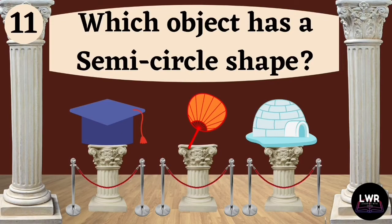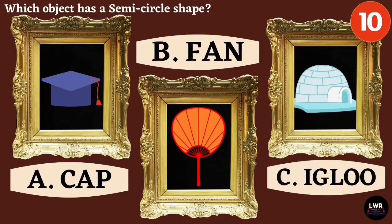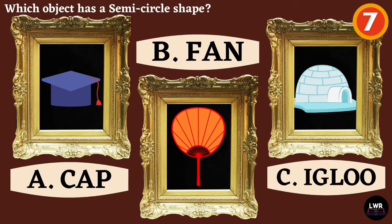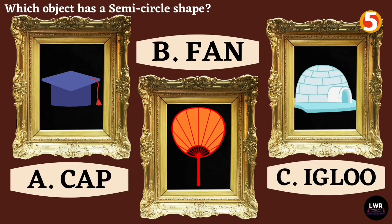Question number eleven. Which object has a semicircle shape? Letter A, cap. Letter B, fan. Or letter C, igloo.